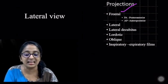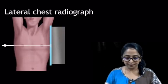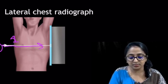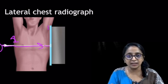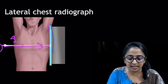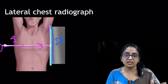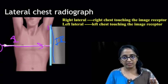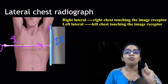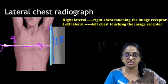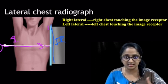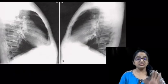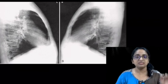Going to the next projection, which is the lateral view. As you can see in the figure, the x-ray beam from the x-ray tube enters from one side of the patient's body and exits from the other side, hitting against the image receptor kept in close contact with one side of the patient's body. There are two types of lateral projection: right lateral and left lateral. Right lateral means the right side of the chest is touching the image receptor, whereas in the left lateral, it is the left side of the chest which is touching the image receptor.